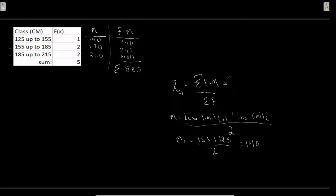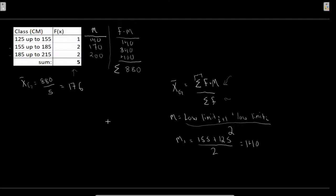That 880 is our summation of frequency times midpoint, which is our numerator. Now we divide by the summation of our frequencies, which we already have as 5. So our grouped mean is 880 divided by 5, which gives us 176.